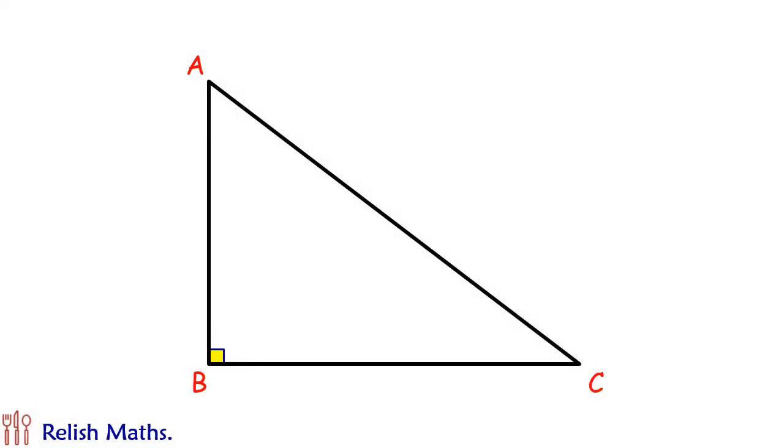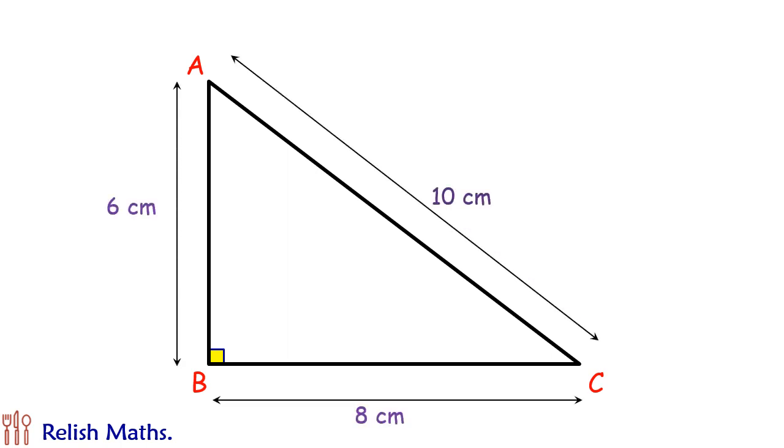Let's see today's question. Right angle triangle ABC is given with sides 6, 8 and 10 cm.